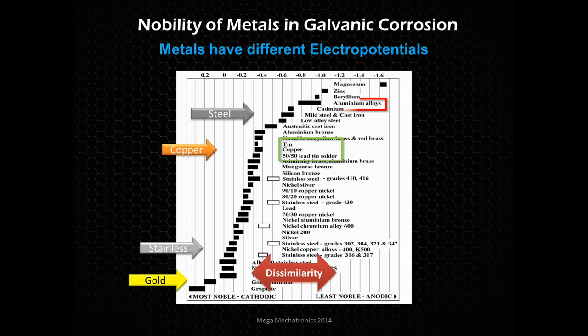On the other hand, aluminum alloys are really high up on the chart. If you combine aluminum with stainless steel, which is near the bottom, you're going to have trouble where that aluminum starts degrading. Same with copper — when you connect aluminum to copper, you need to seal it off and use some zinc paste. Zinc is less noble, so the zinc will actually sacrifice itself.